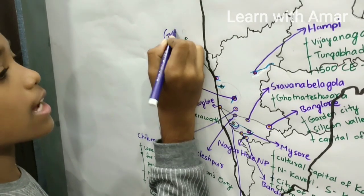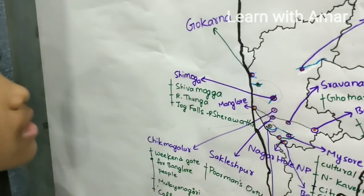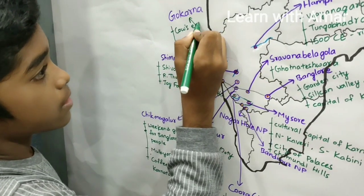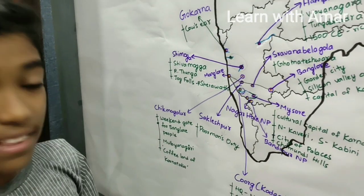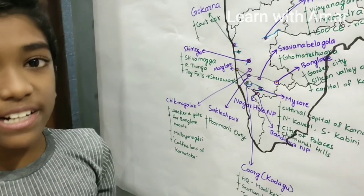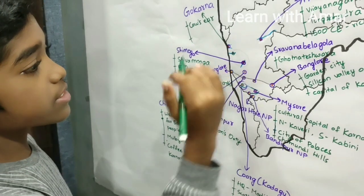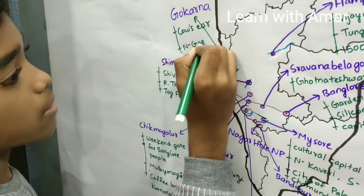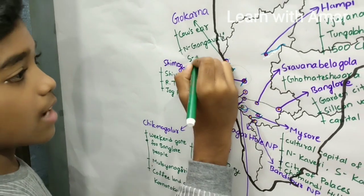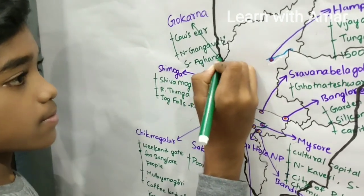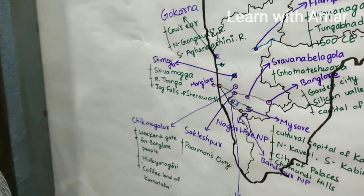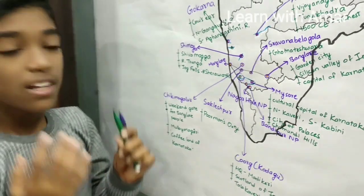Here we find Gokarna. Gokarna means cow's ear — it got its name from its shape, which is like a cow's ear. Gokarna is situated between two rivers: Gangavali to the north and Aghanashini to the south. So we have completed the major tourist spots in Karnataka.